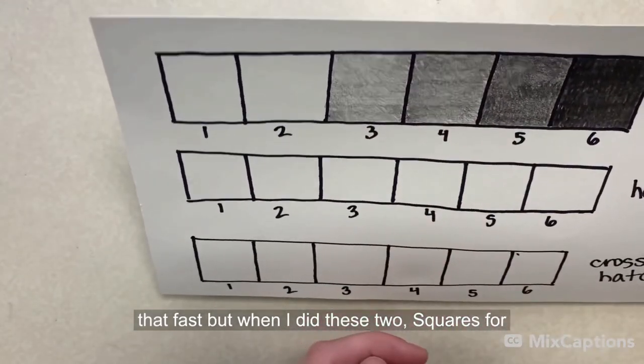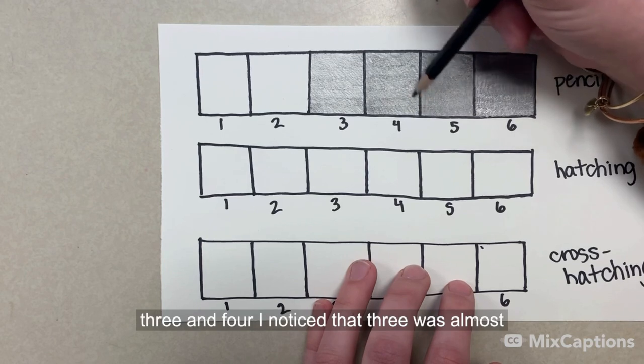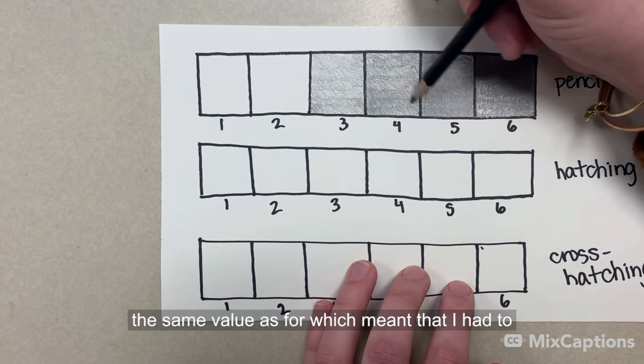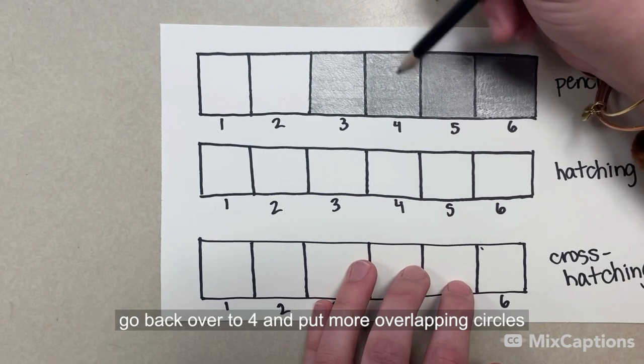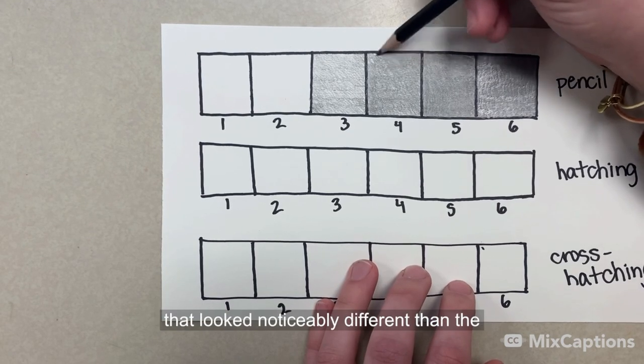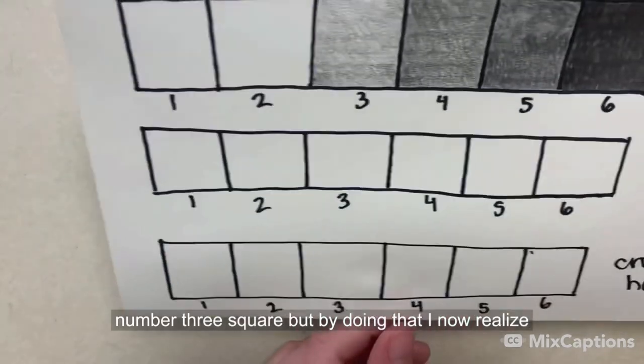But when I did these two squares for three and four, I noticed that three was almost the same value as four, which meant that I had to go back over to four and put more overlapping circles over top, just a little bit lighter. So that way that looked noticeably different than the number three square.